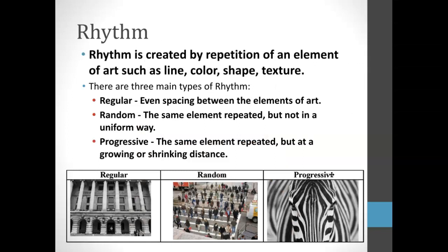The first principle we're going to talk about is something called rhythm. Rhythm is kind of like how you can have rhythm in music — you've got a repetition of something like a melody. Except in a photograph we might be using an element of art to create that repetition. We might see a line repeating over and over again, or color, or even space and shape and texture. We have those things repeat over and over again and it creates a rhythm because of the spacing used.